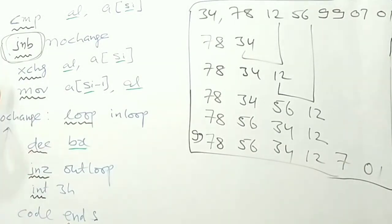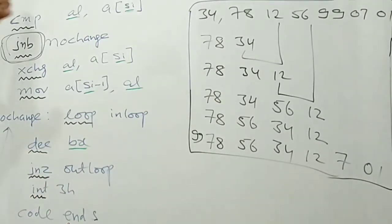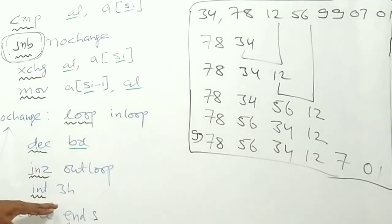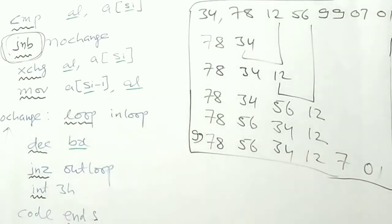So this process continues until the value that is there in BX. We are decrementing the BX. BX is nothing but the length of the array. If this value becomes zero, it will come out of the loop. It will stop the program and we will get the final output.